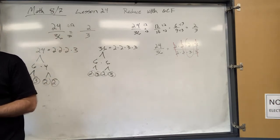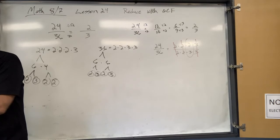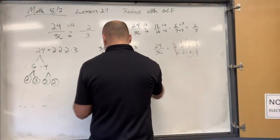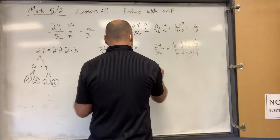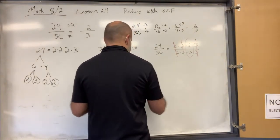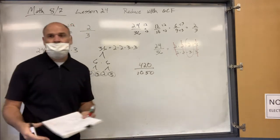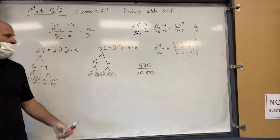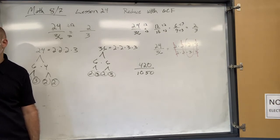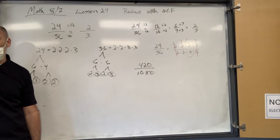Let's reduce another fraction. You could do the factor tree, or just reduce your own way. You could divide them both by 10 right away and get rid of those zeros, leaving you with 42 over 105.